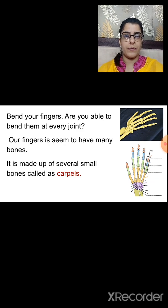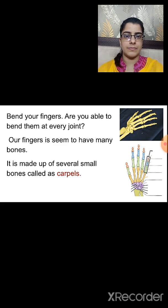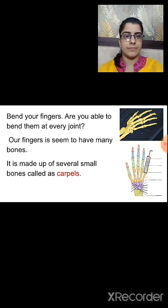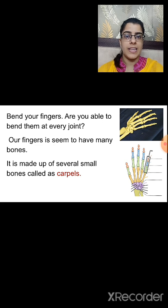Now observe your finger and bend it. You will observe that your finger bends at every joint. That means our finger is made up of several small bones called carpals. When you bend your finger, you will observe it bends at many joints, meaning our finger consists of many small bones called carpals.